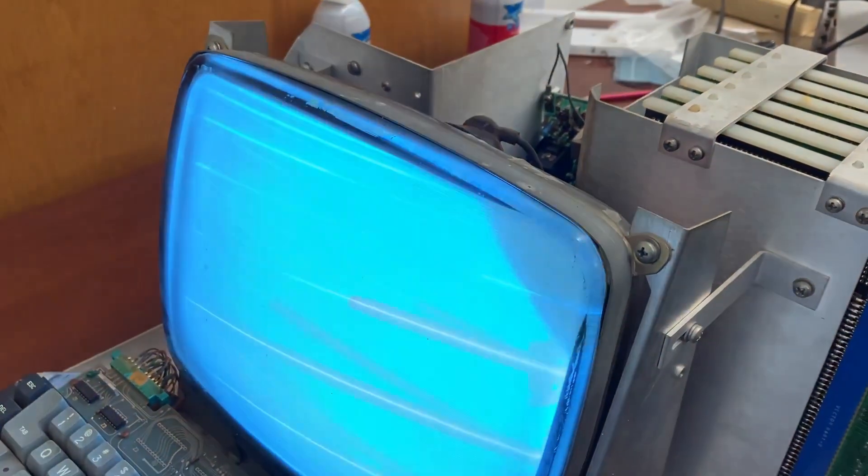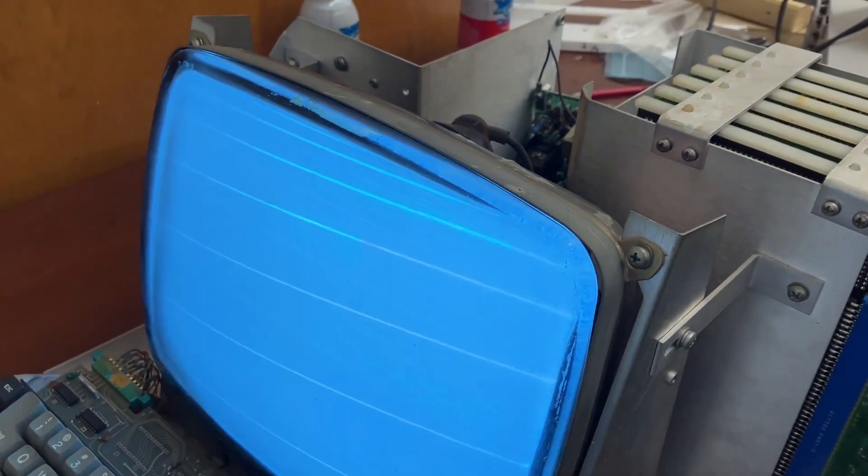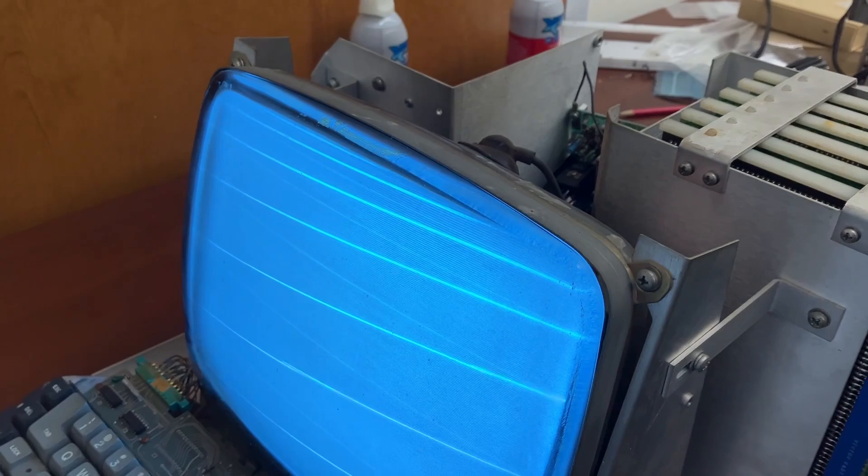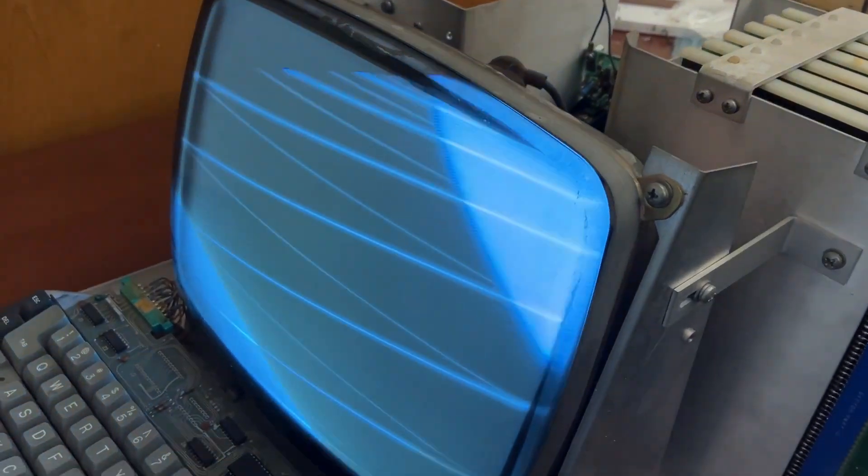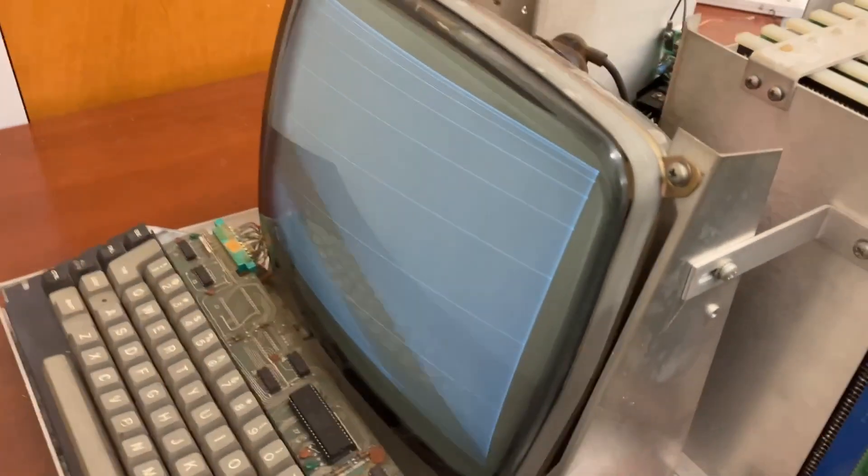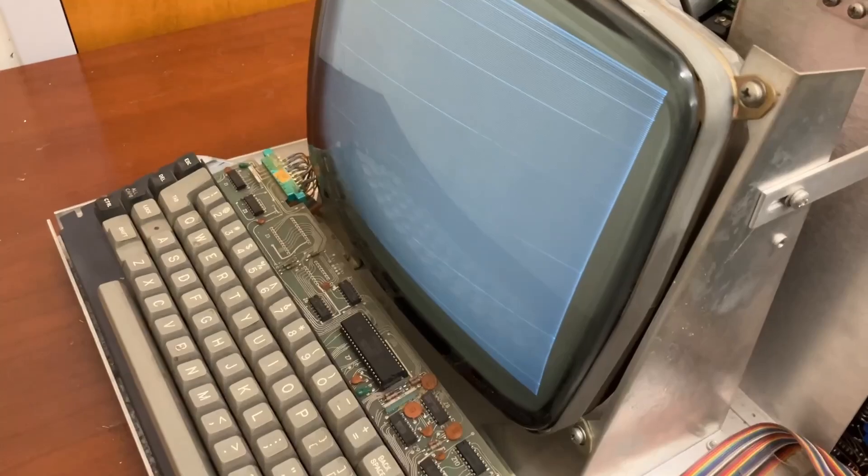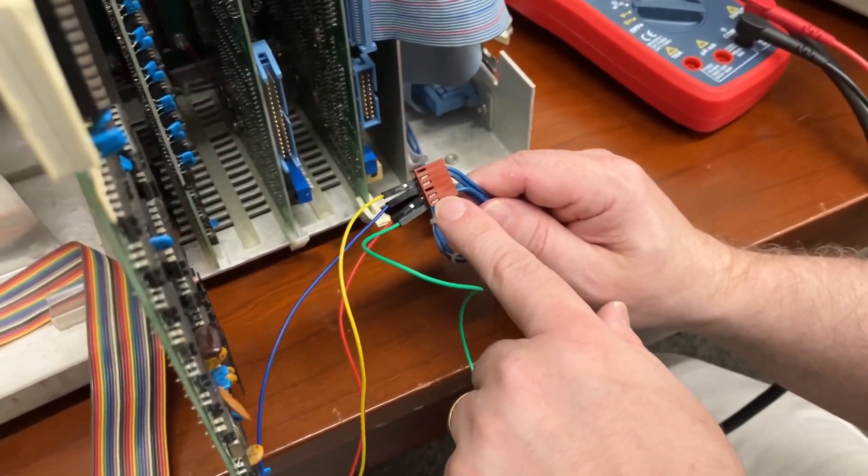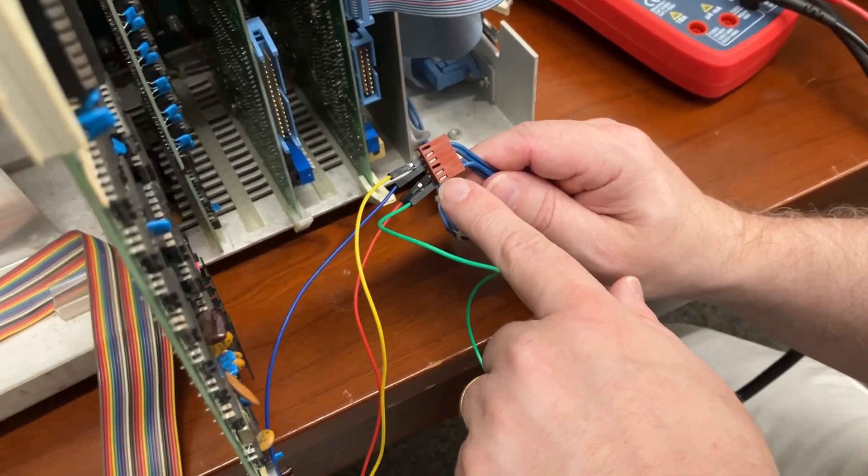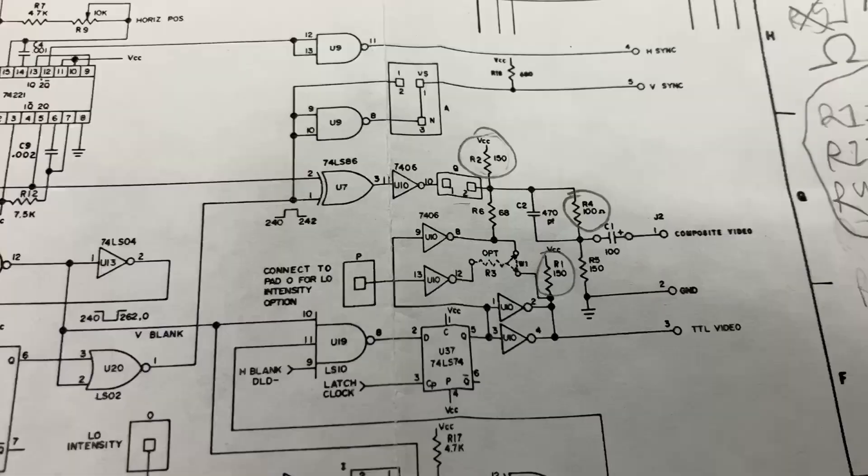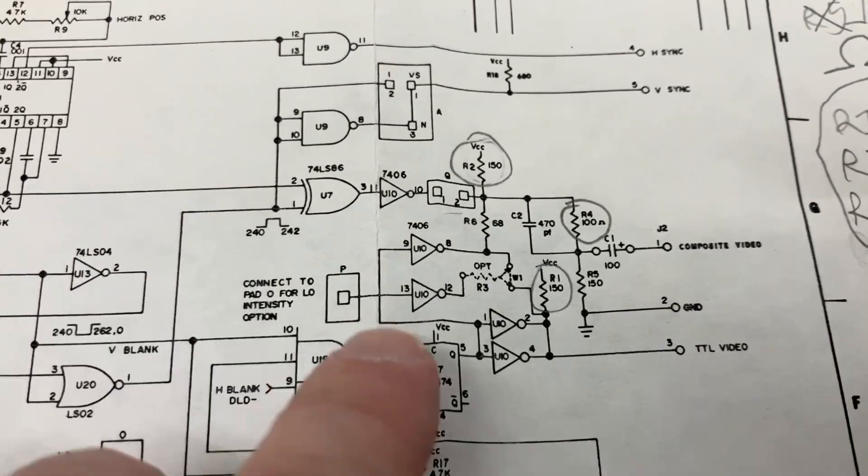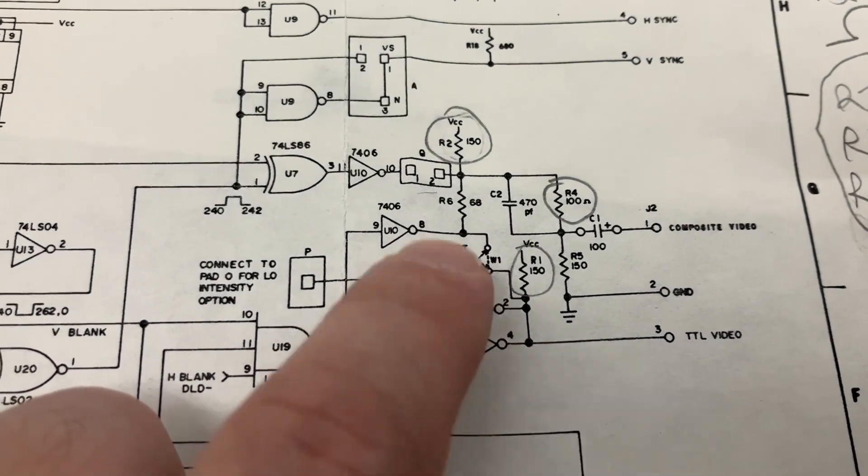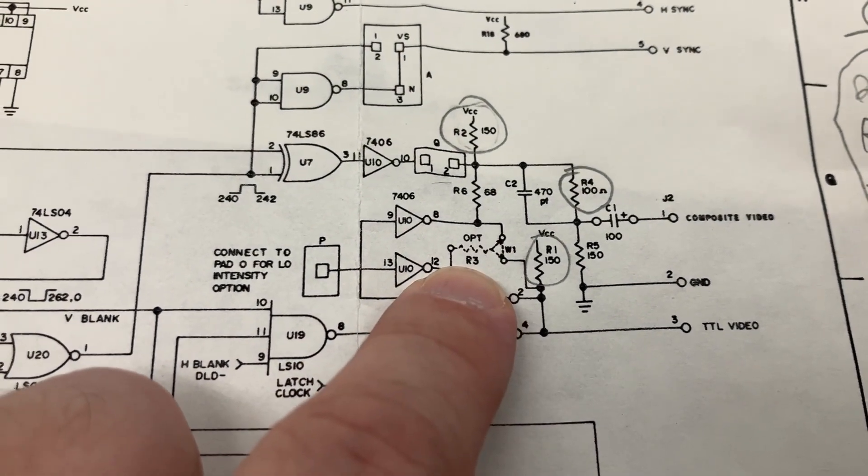So it's definitely expecting a TTL-level signal, I think, which is why it makes no sense to me that it's hooked to this composite output. So why is it hooked to this composite output? Oh, what is going on here? I don't understand. I also wanted to mention that R3, this optional resistor, is not present on the board. So there's nothing in for R3.